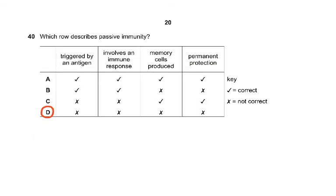Question 40: Which one describes passive immunity? Passive immunity is the one where you have not been exposed to the antigen. Not triggered by an antigen, no immune response, no memory cells produced, and no permanent protection because you just get ready-made antibodies. Passive immunity is either mother to the fetus which is natural passive, or artificial passive when you give an injection of tetanus. It has very temporary protection. The answer was D.